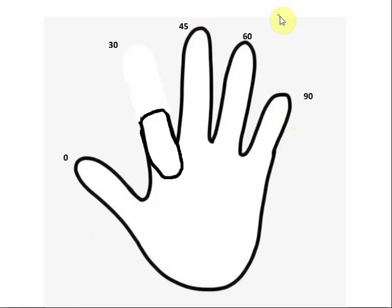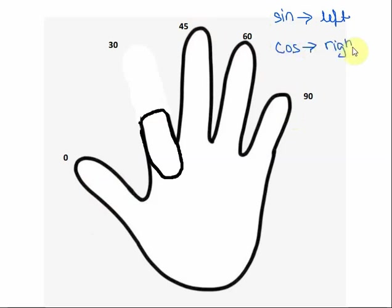So let me write that down. Sine will be the number of fingers to the left. Cosine is the number of fingers to the right. And we're also going to use this square root over two. We fill this in depending on however many fingers we have.